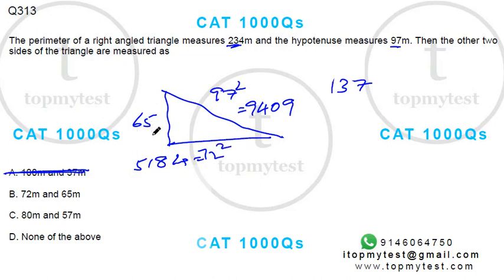65 square will be 25, 6 into 7 is 42. So this will be 9, 0, 49, 94, 0, 9, which is there.